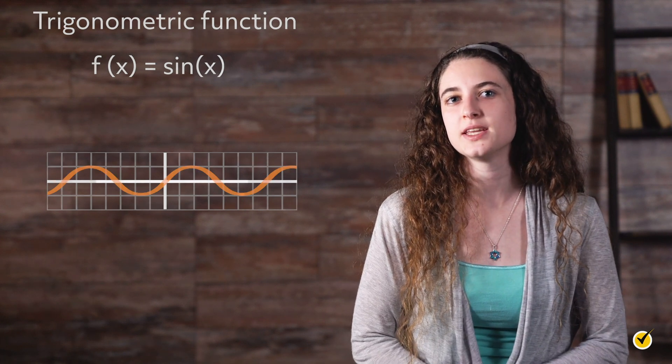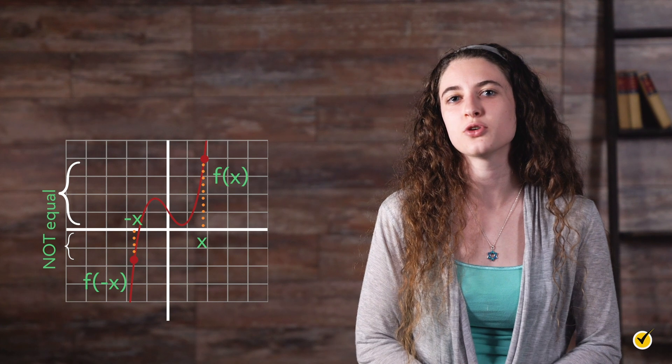As mentioned, a function can be neither even nor odd if the above equations and symmetric properties are not satisfied. The graph here clearly does not have symmetry about the y-axis nor about the origin.